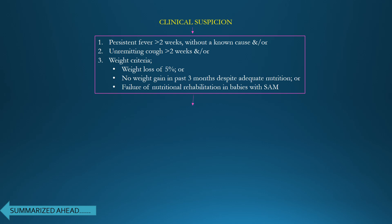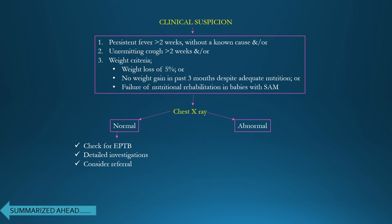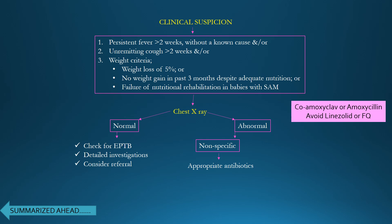If TB is suspected, the first investigation is a chest X-ray. If normal, check for extra-pulmonary tuberculosis and proceed with detailed investigations including CECT thorax, USG thorax, USG abdomen, and consider referral. If the chest X-ray shows non-specific findings, give a course of appropriate antibiotics — co-amoxiclav for children under five years and amoxicillin for those over five years. Avoid levofloxacin and fluoroquinolones as these have anti-TB activity and promote resistance.